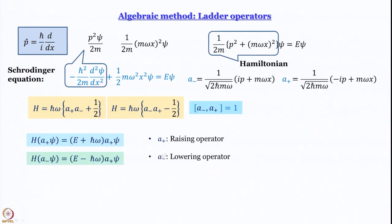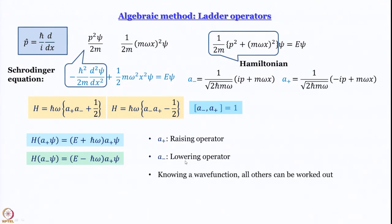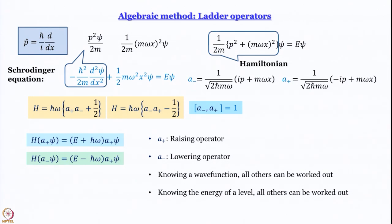Similarly, when a₋ operates on ψ, the eigenvalue for the new wave function is E − ℏω. So a₋ is called the lowering operator. The good thing about this is that in principle, if we know one wave function, we should be able to work out the others by going up and down the ladder using the appropriate ladder operator. If you know the energy of one level, we can work out all others — and this is something we will do in the next 15–20 minutes.